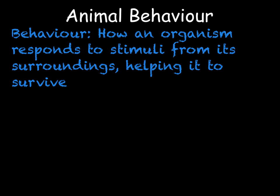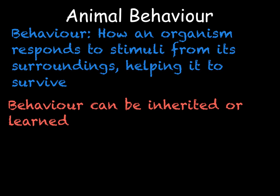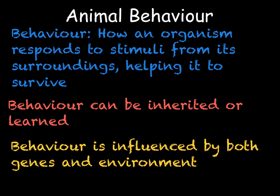Behaviour is how an animal or organism responds to stimuli from its surroundings — how it responds to things going on in its environment. These responses are usually done in order to help the organism survive. Behaviour can either be inherited or learnt, but most behaviour relies on a combination of these two, meaning it is influenced by both your genes as well as your environment. You need to know examples for both.